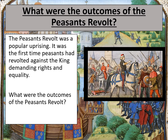The Peasants' Revolt was a popular uprising and it was the first time the peasants had revolted against the King, demanding their rights and equality. Similar movements such as the Chartists of the 19th century, who were working towards class equality and equal political rights, and the Suffragette movement in the 20th century, which was trying to get votes for women, all were similar to the Peasants' Revolt and in fact partly inspired by it. Today's lesson is going to focus on the outcomes of the revolt and what impact it had on England.